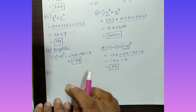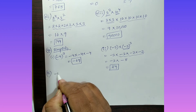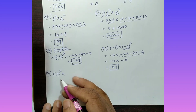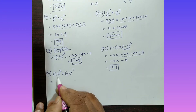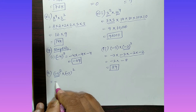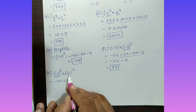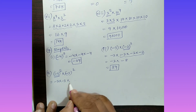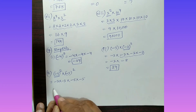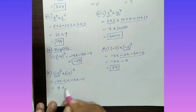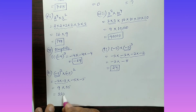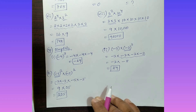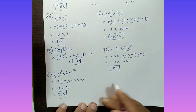Part (iii): Simplify minus 3 square multiplied by minus 5 square. Minus 3 squared means minus 3 into minus 3, which is positive 9. Minus 5 squared means minus 5 into minus 5, which is positive 25. Minus into minus gives plus, so 9 into 25 equals 225. The answer is 225.